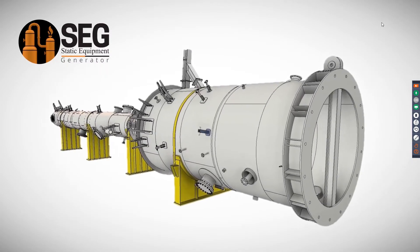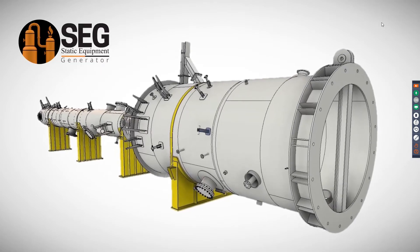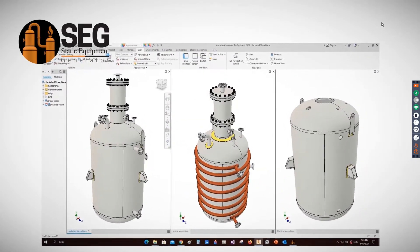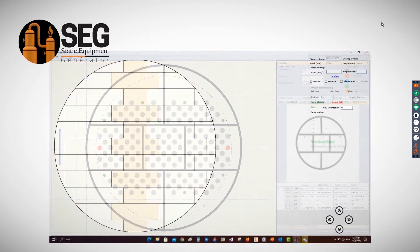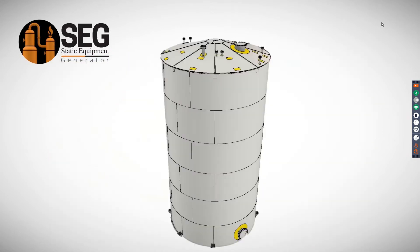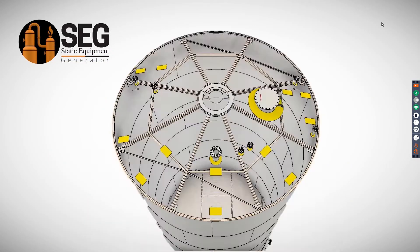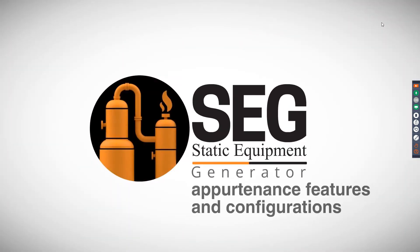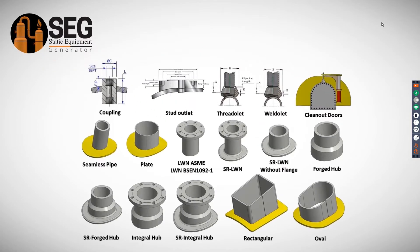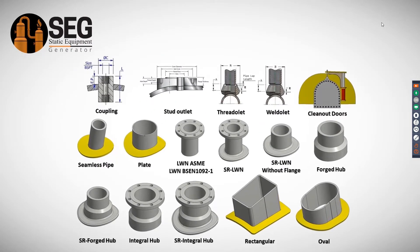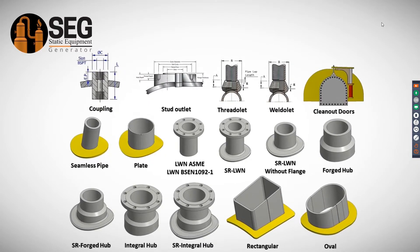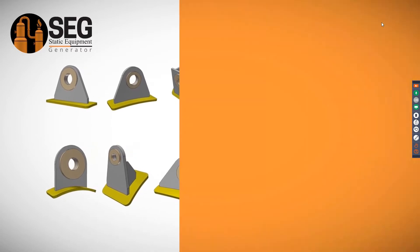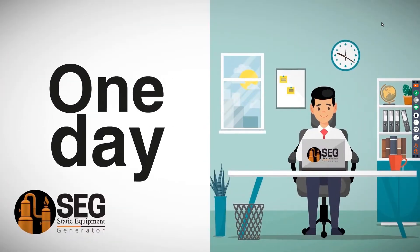SCG works over Autodesk Inventor as a platform and will soon be available on SolidWorks. It generates a 3D digital prototype prior to manufacturing and creates workshop drawings, including detailed bill of materials, nozzle tables, welding details, and more. SCG supports horizontal, tilted, and vertical vessels; various supports including saddle, skirt, lug, and legs; columns with multi-sectional shells; vessels with half-pipe jackets and coils; TEMA heat exchangers; and storage tanks. SCG can be mastered in one day of training.